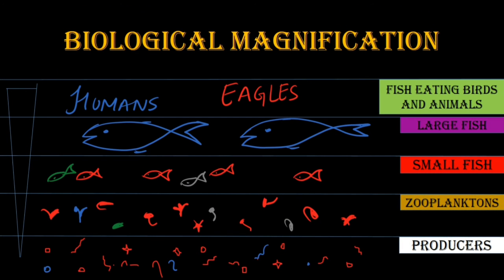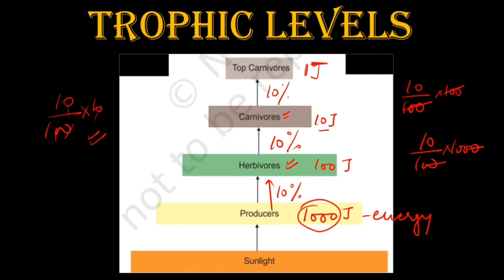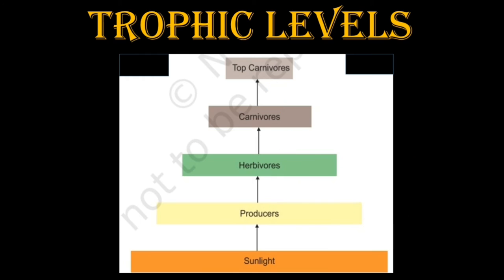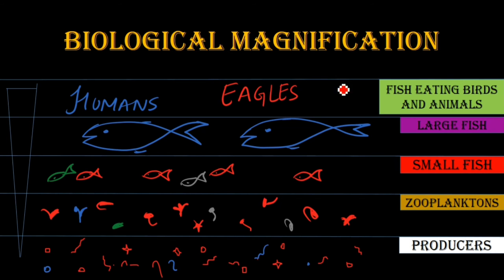Biological magnification, or biomagnification. As you saw here, the energy is getting transferred — but not only energy is getting transferred, there are many more things which are also getting transferred, for example, chemicals. So biological magnification or biomagnification means the magnification of chemicals from one individual to another individual. Let's understand this with this whole diagram.